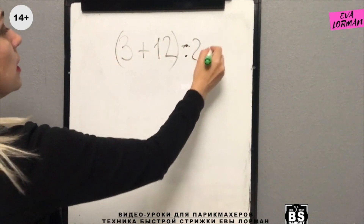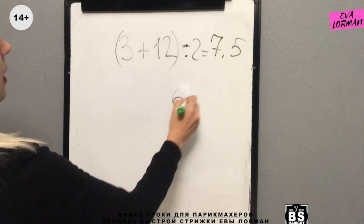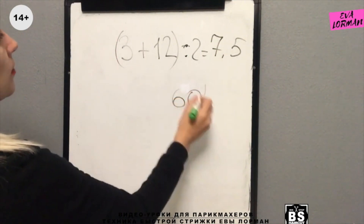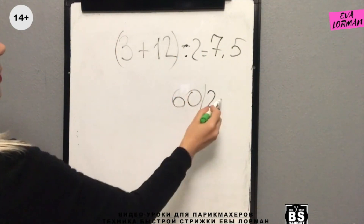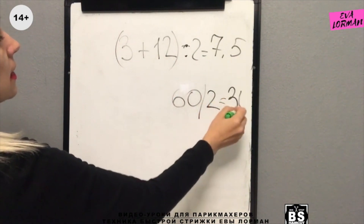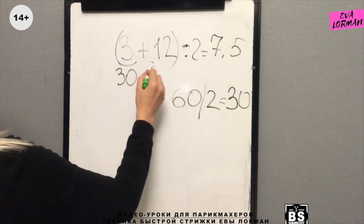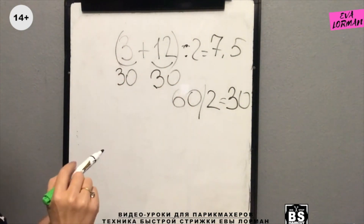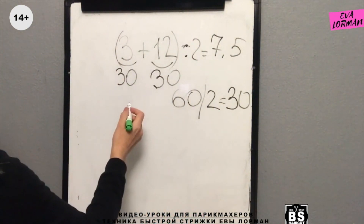If you need 7.5%: 3% plus 12% divided by 2 gives 7.5%. If you need 60 grams of oxide, divide into two parts — take 30 grams of 3% and 30 grams of 12%. That's how simple it is. You just need to know your math.